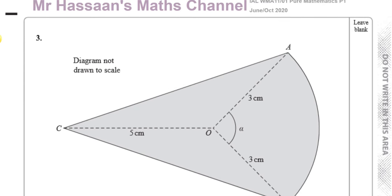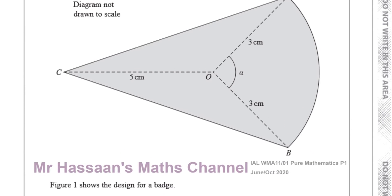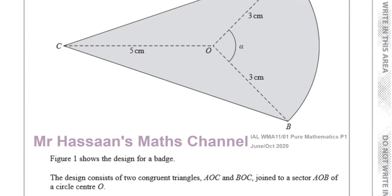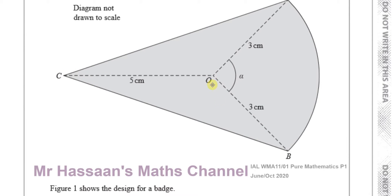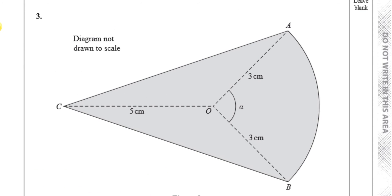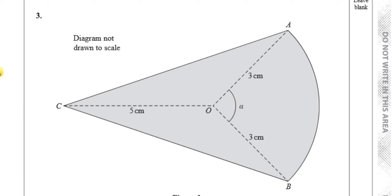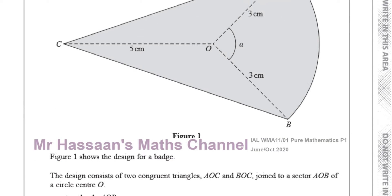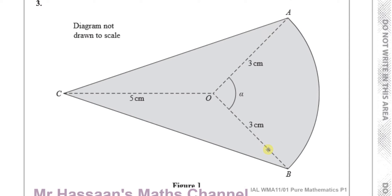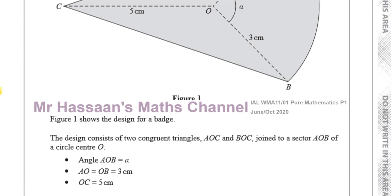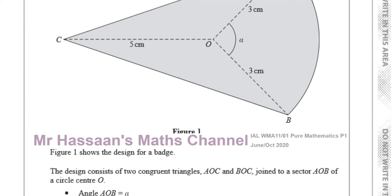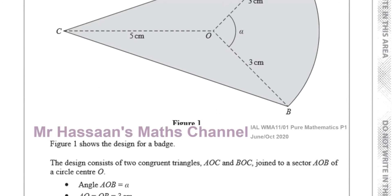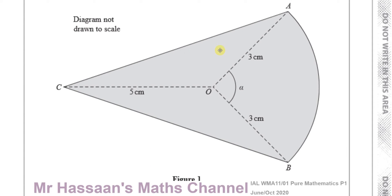Here we have a question that tells us this diagram is not drawn to scale. It says it's the design for a badge. It consists of two congruent triangles, AOC and BOC — AOC on top and BOC — joined to a sector AOB of a circle with center O. AO and OB are the same because they are both the radius, and OC equals 5 centimeters. These two are congruent triangles.